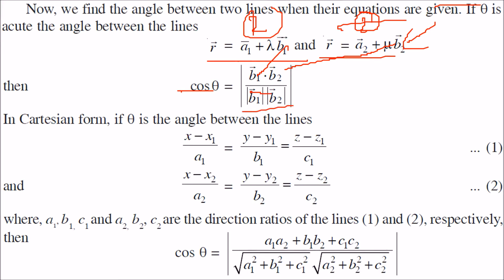In Cartesian form, the line equation is given. When we find cos theta, it will be a1a2 plus b1b2 plus c1c2 divided by the square root of the coefficients.